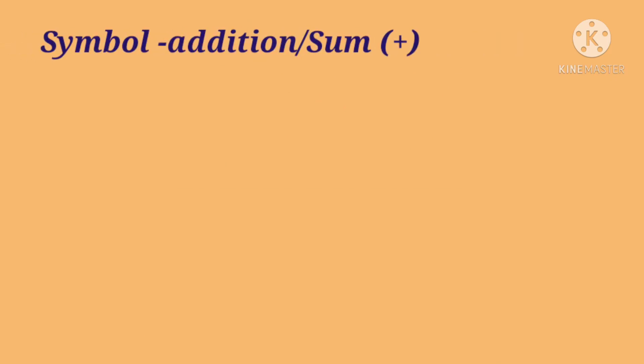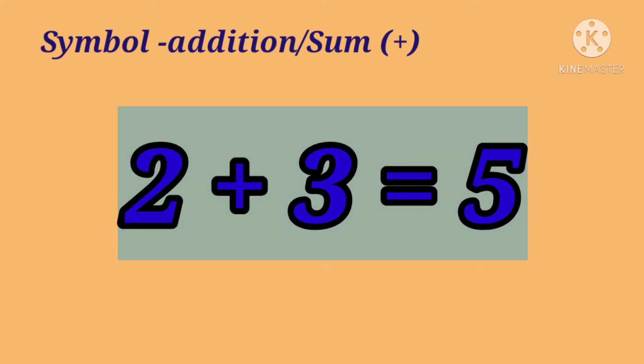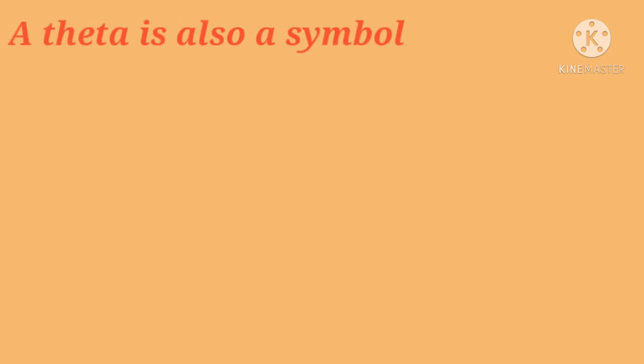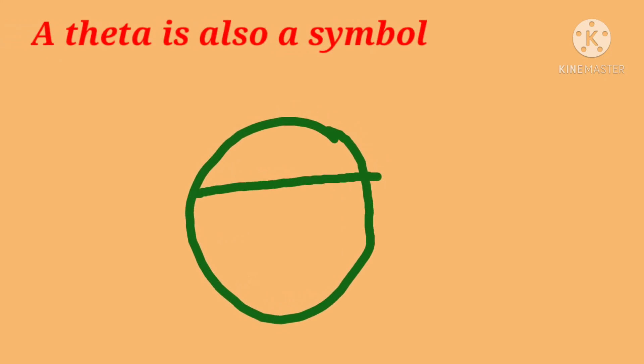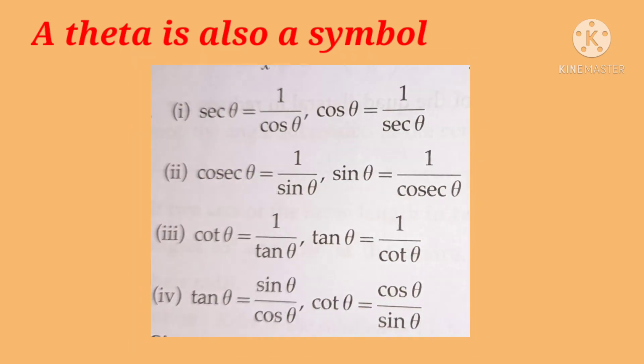In the most simplest way, we can use the term addition. That is the process of calculating the total of two or more numbers or amounts. Then we use the symbol plus sign for addition. So even theta is also a symbol. It is used in trigonometric functions. If we don't know the measure of the angle, we will represent it as theta so that it represents an unknown angle.